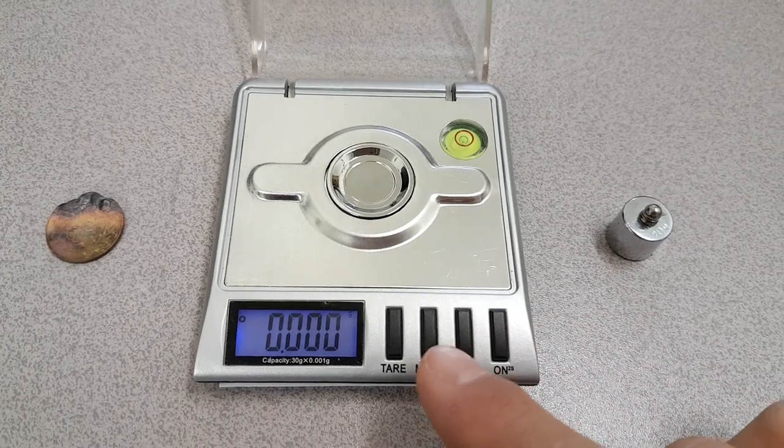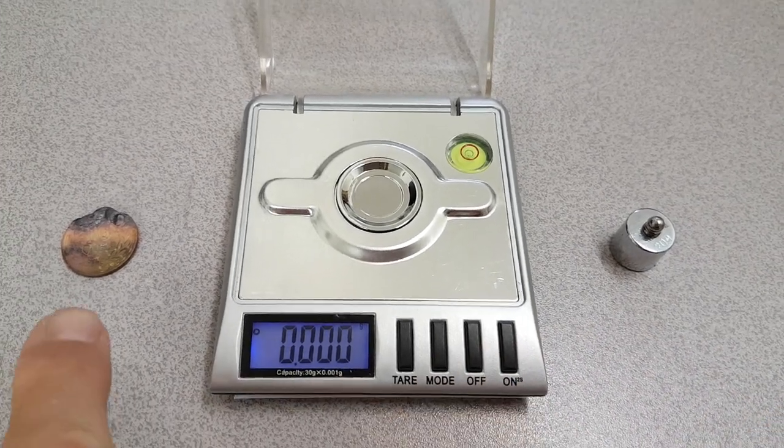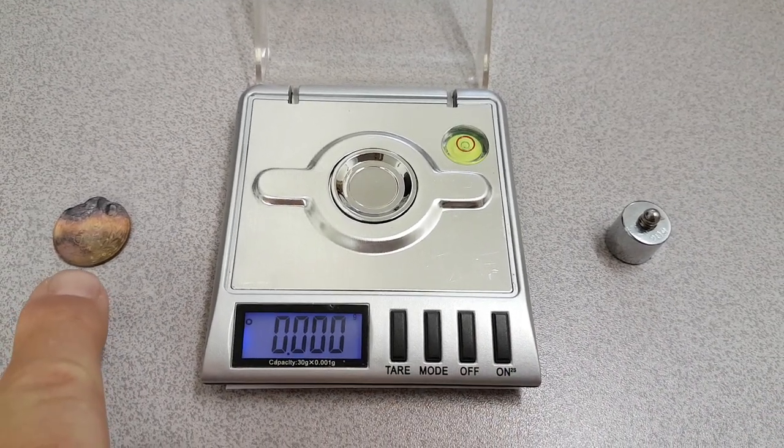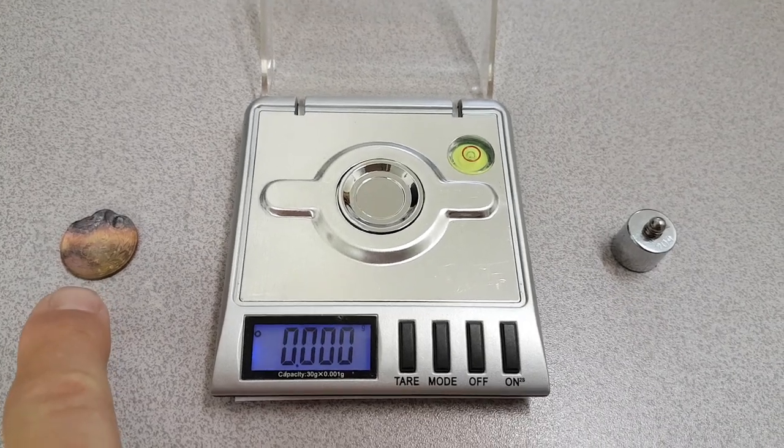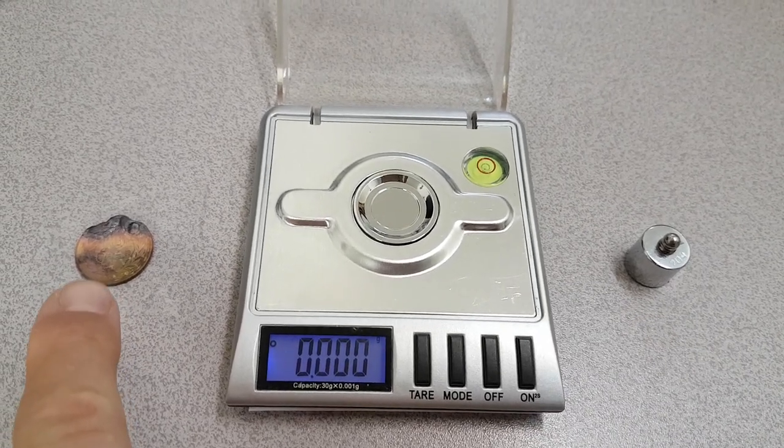I've got a little jeweller's scale here. From Wikipedia, the 10 yen coin should weigh 4.5 grams.